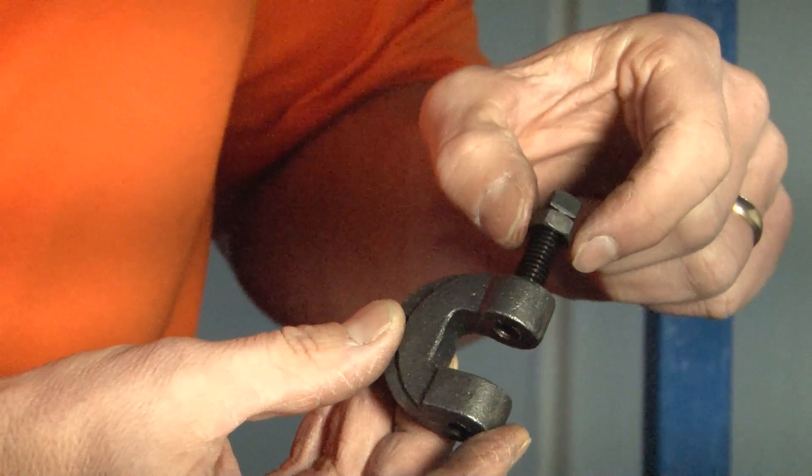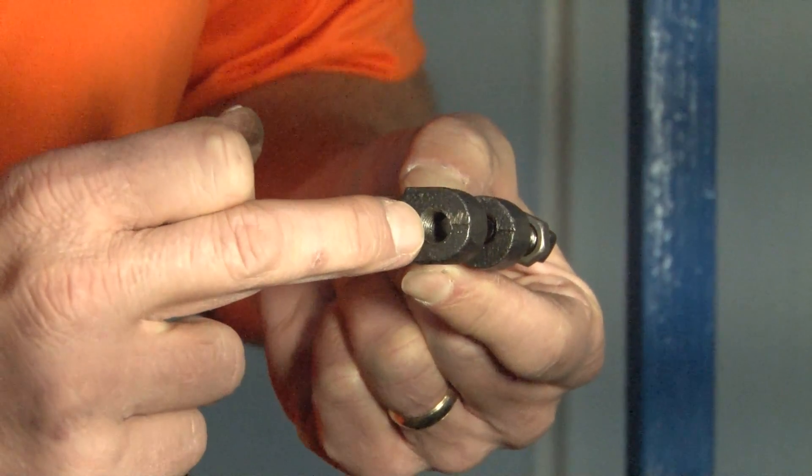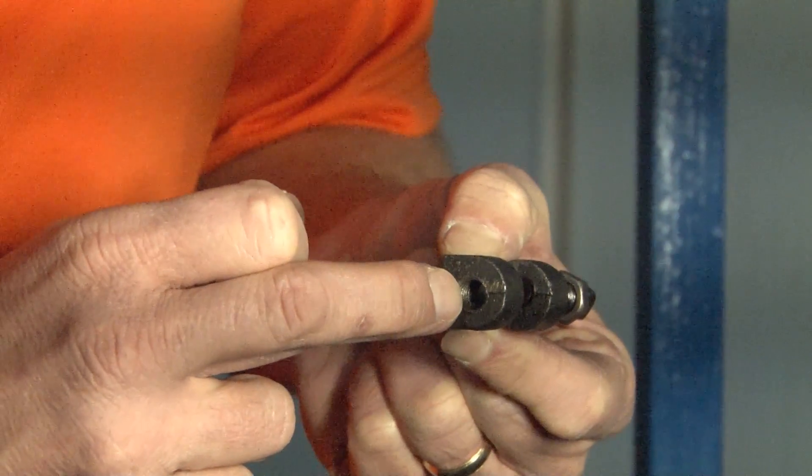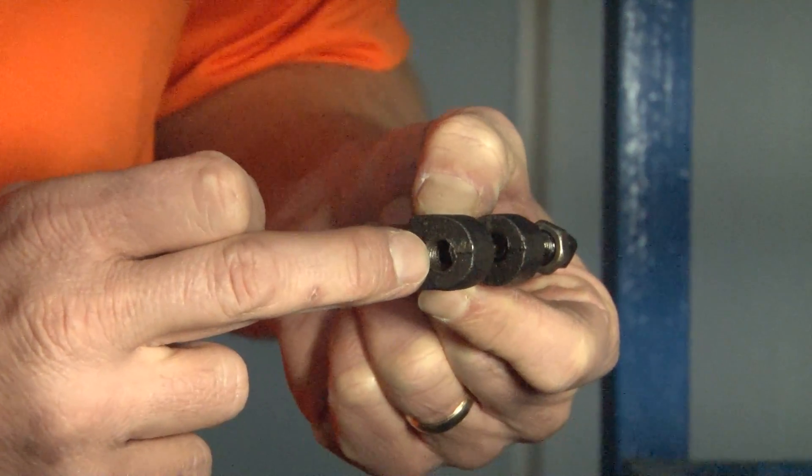It comes with a hardened set screw and a jam nut. The bottom of this rod hanger beam clamp has a hole that's been tapped for three-eighths, half-inch, five-eighths, or three-quarter inch threaded rod.